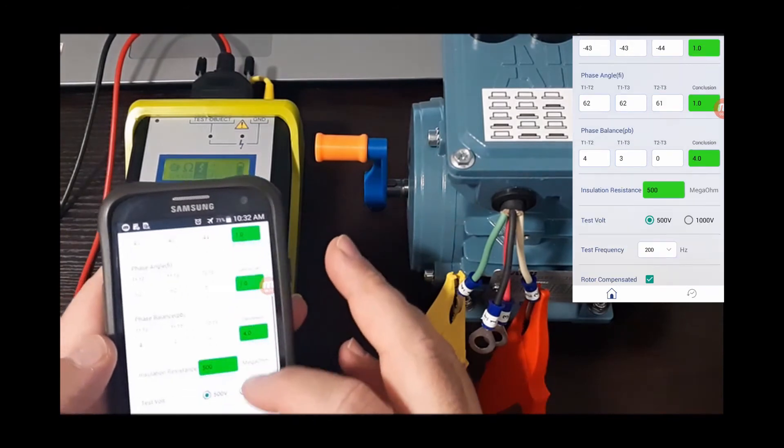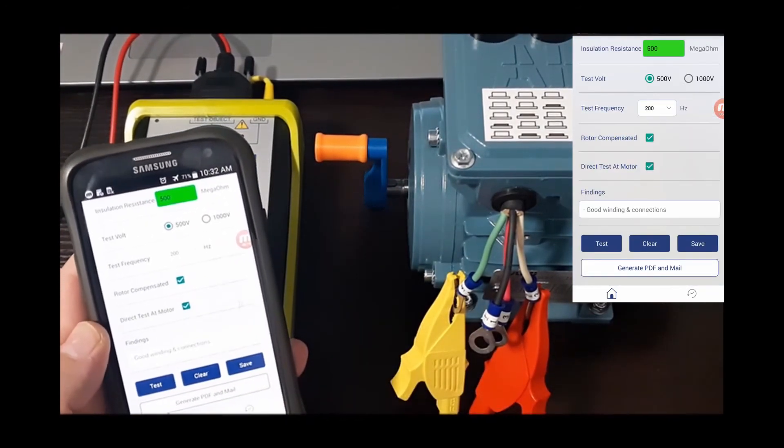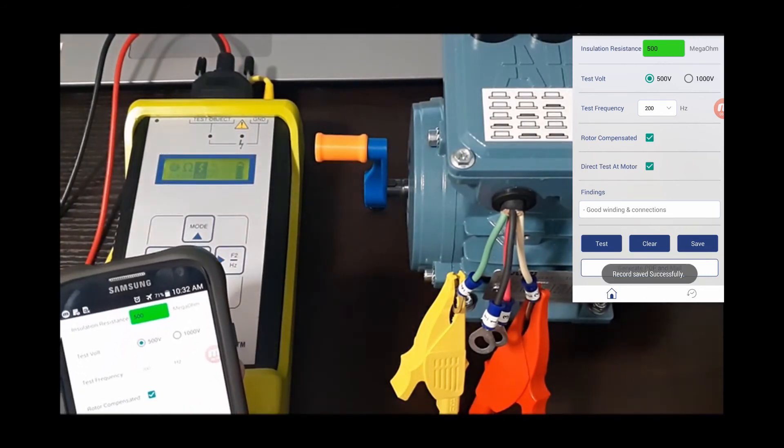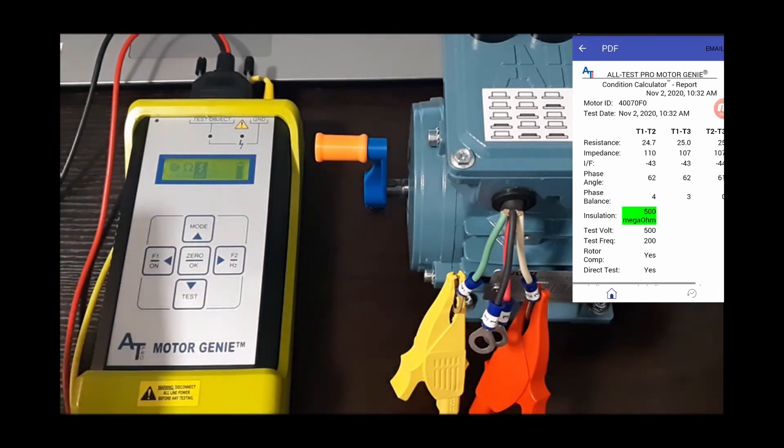Hit back, everything looks good. I can hit the test button here, it'll tell me good windings and connections, and then I can save it. It's now saved on my phone. I can also generate a PDF and email.